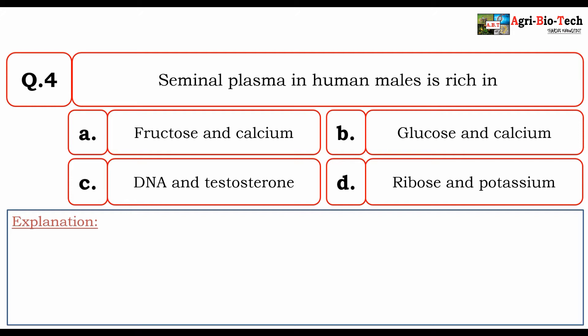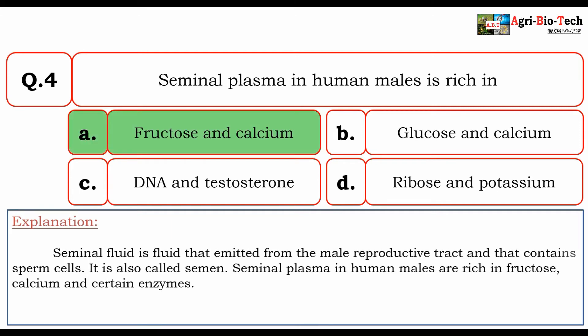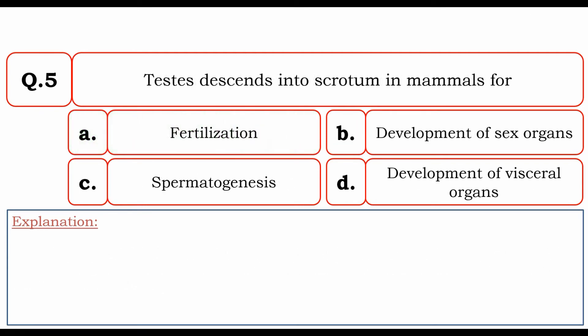Next question: seminal plasma in human males is rich in — fructose and calcium, glucose and calcium, DNA and testosterone, or ribose and potassium? The correct answer is A: fructose and calcium. Seminal fluid is the fluid emitted from the male reproductive tract that contains sperm cells, also called semen. Seminal plasma in human males is rich in fructose, calcium, and certain enzymes.